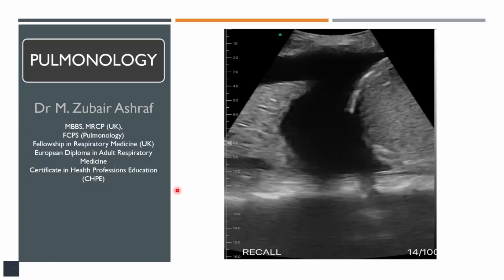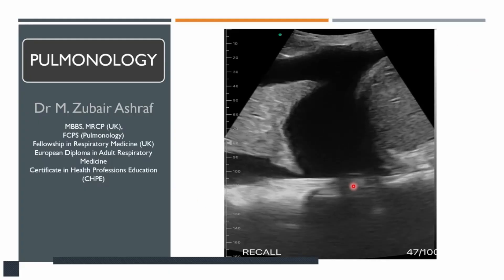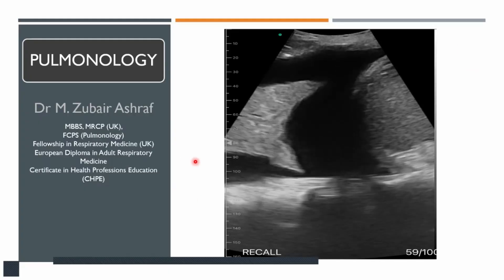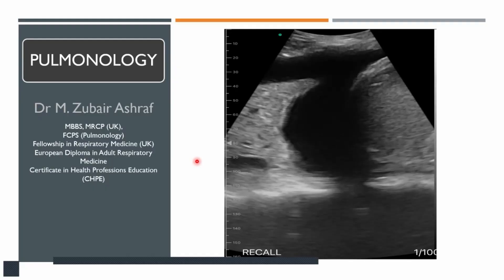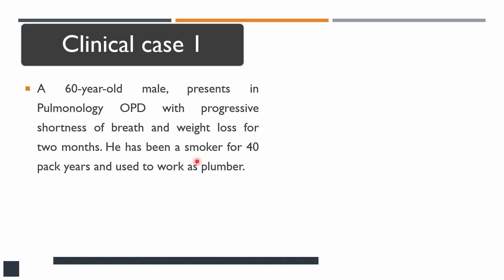Some of you may be able to guess the topic by looking at this ultrasound image, others will get to know soon. I will start with a clinical scenario: a 60-year-old male presents in pulmonology OPD with progressive shortness of breath and weight loss for two months. He has been a smoker for 45 years and used to work as a plumber.